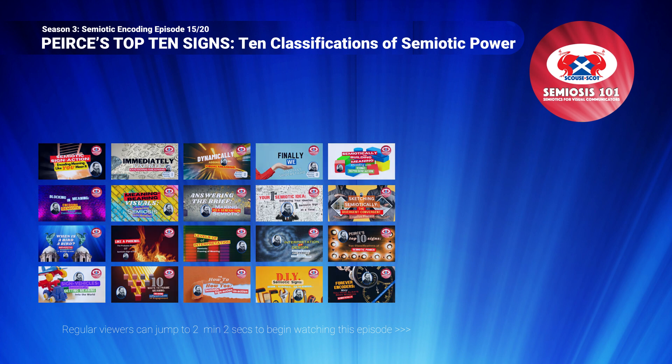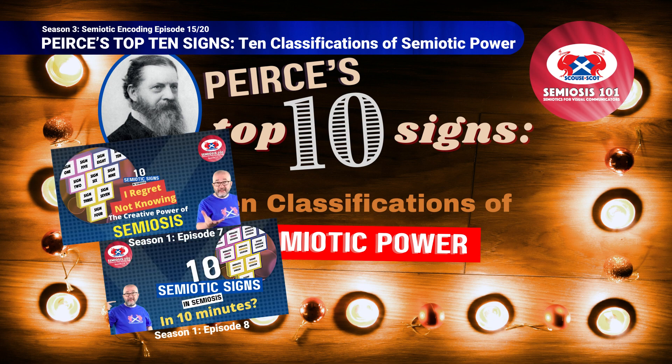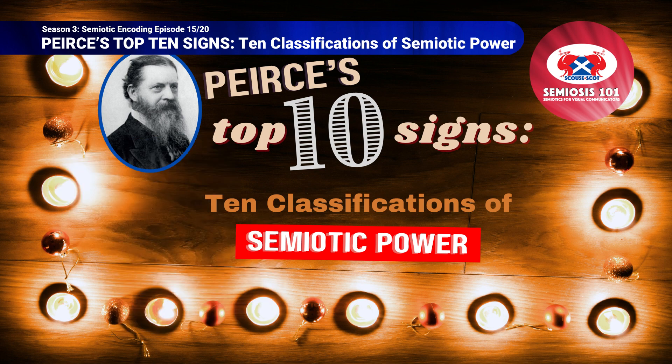Early in Season 1, I introduced Peirce's 10 sign classifications over 2 episodes. Check out Episodes 1.7 and 1.8. These episodes could only set the scene and I promised I would eventually come back to the subject. Well, here we are at last. The previous 14 episodes of Season 3 have provided enough theoretical context to begin to explain these sign classifications.